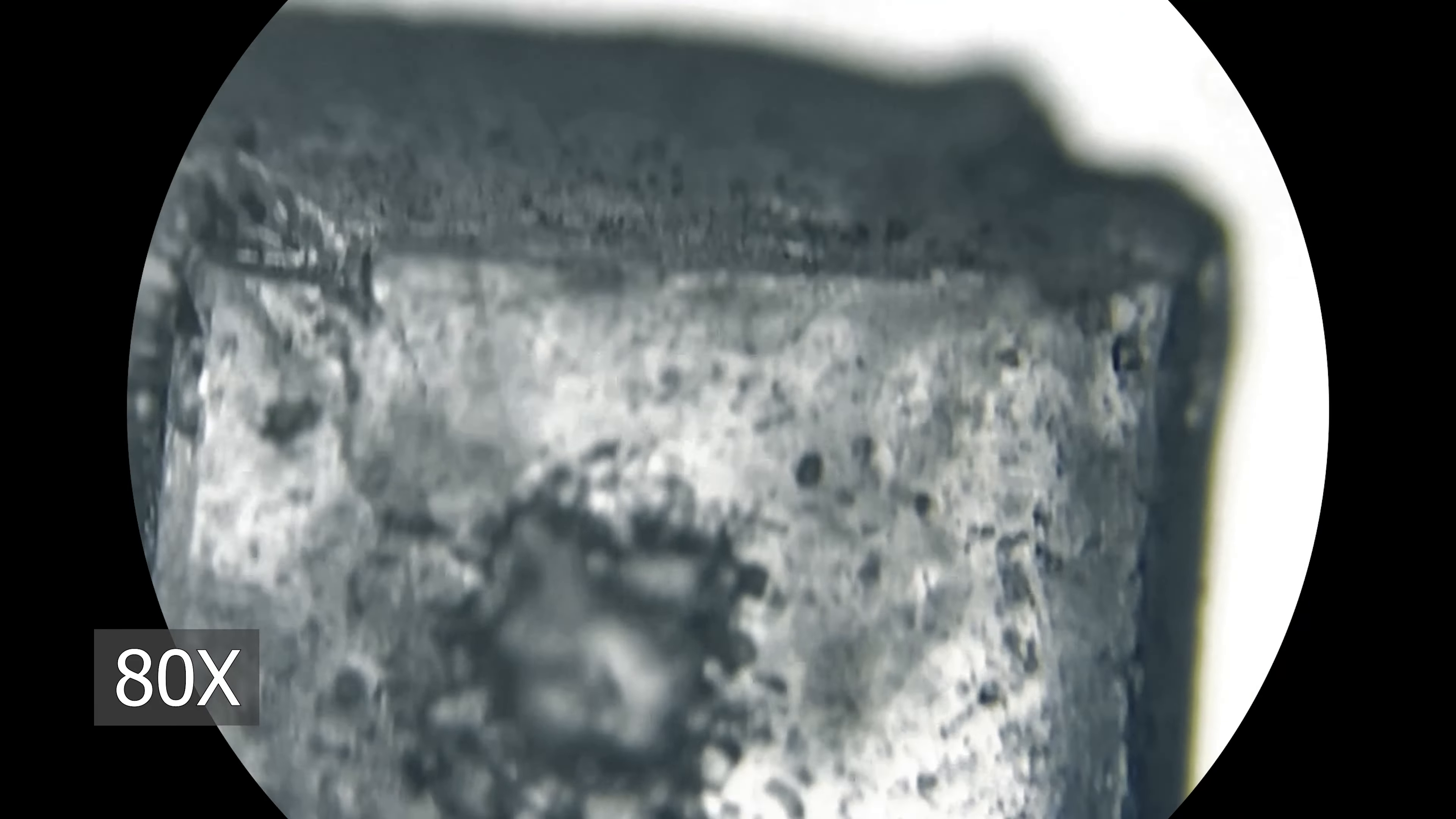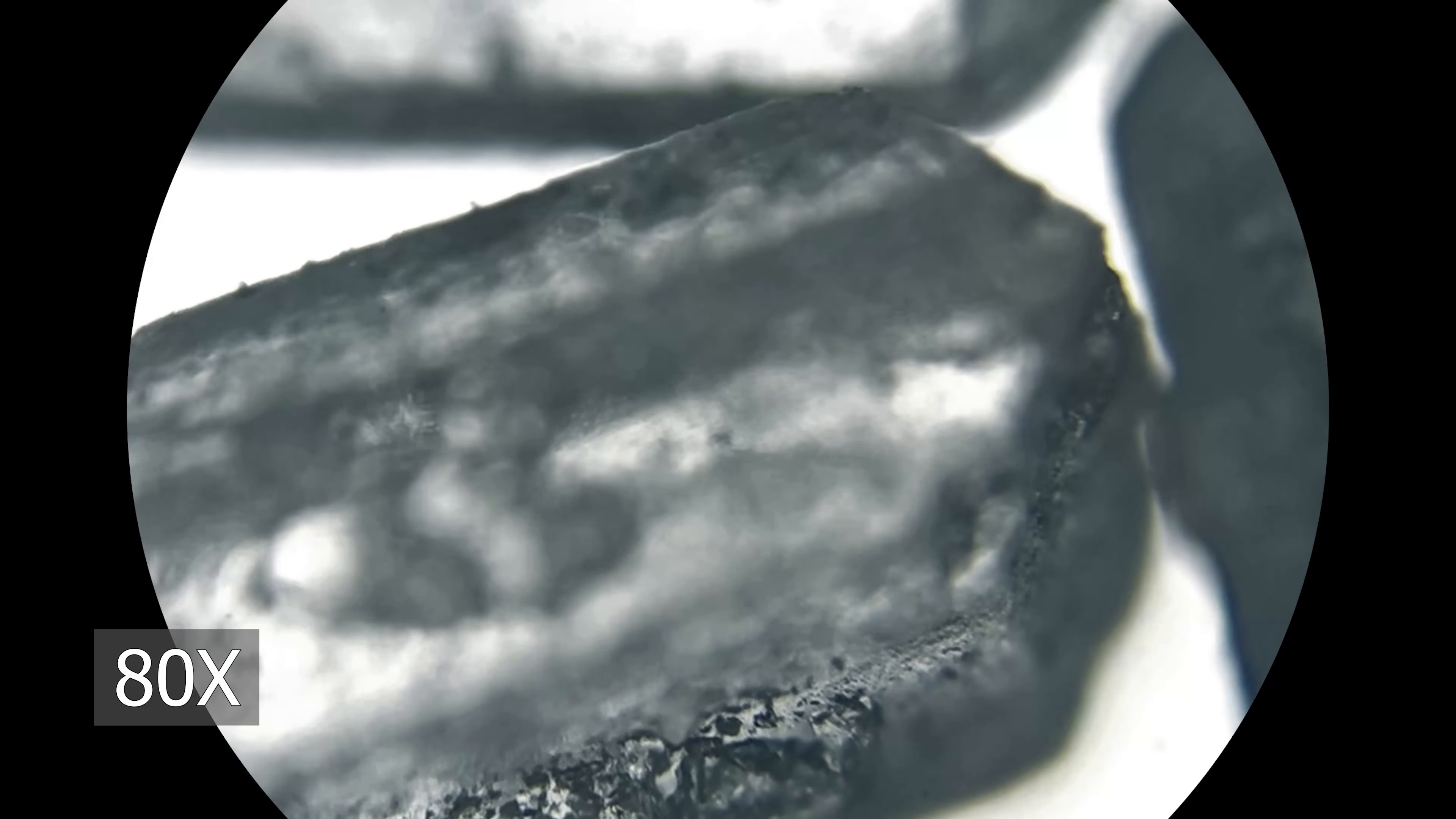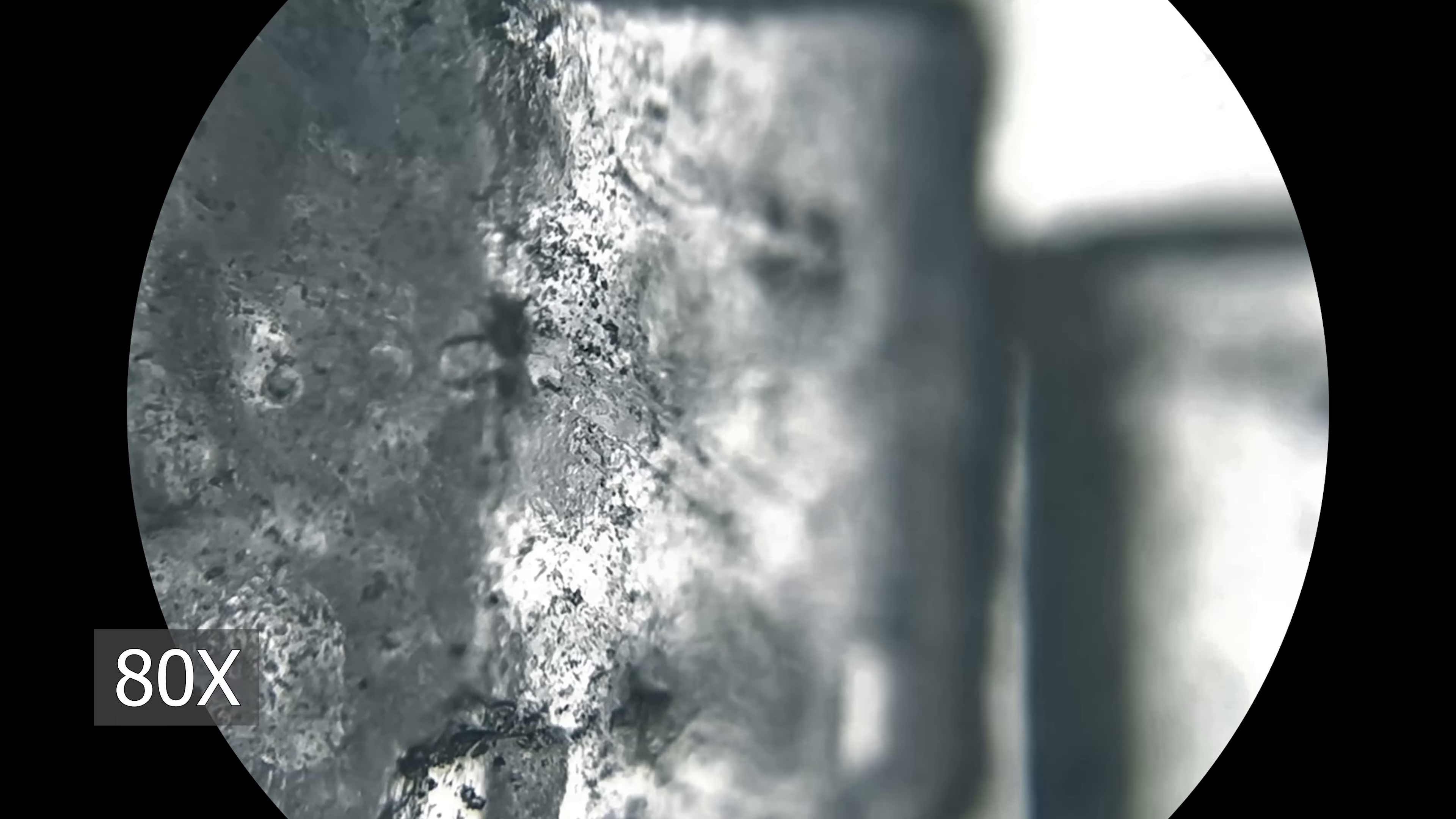Both sugar crystals and ice cubes have a crystalline structure, which means their particles are arranged in a repeating pattern. This structure can be observed under a microscope, with the crystals appearing as distinct shapes and facets. Both sugar crystals and ice cubes can be transparent or translucent, allowing light to pass through them.